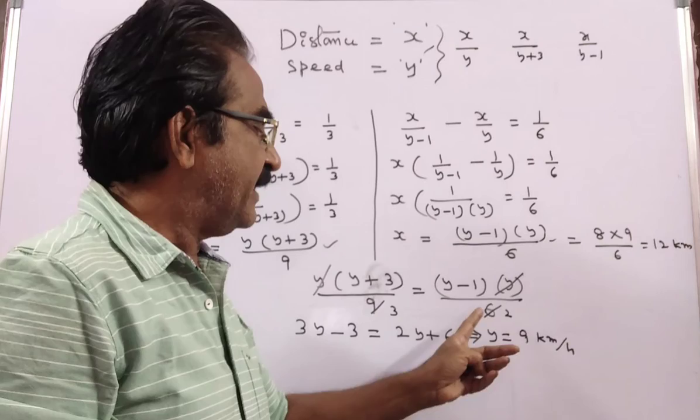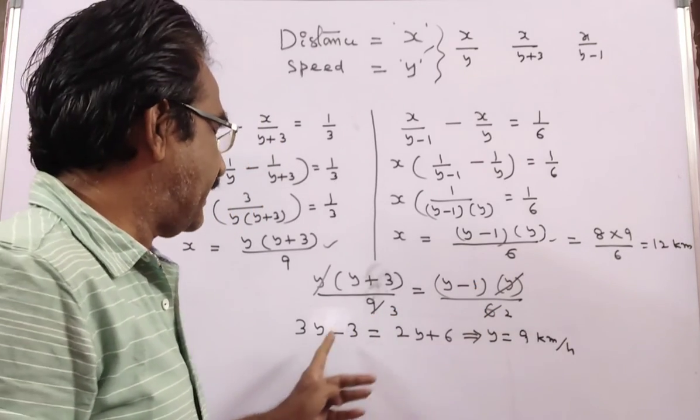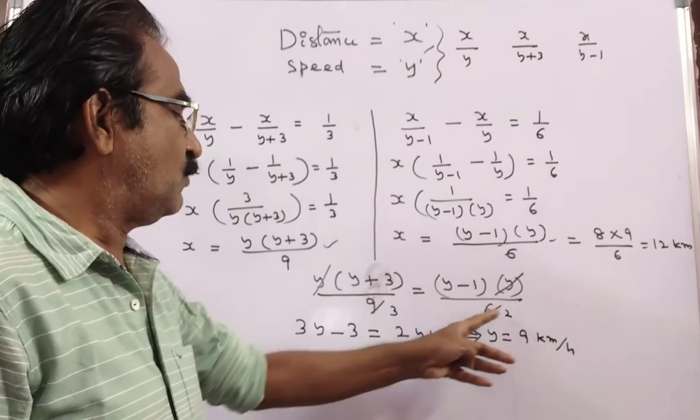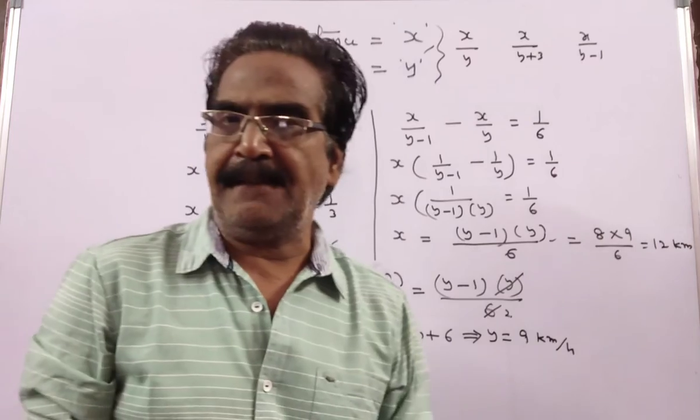y gets cancelled. Then dividing by 3 and 2, we get 3(y minus 1) equals 2(y plus 3). So 3y minus 3 equals 2y plus 6. This implies y equals 9 kmph.